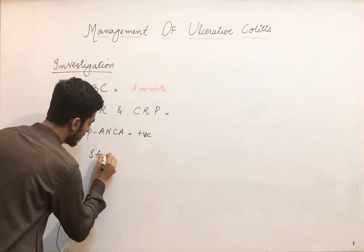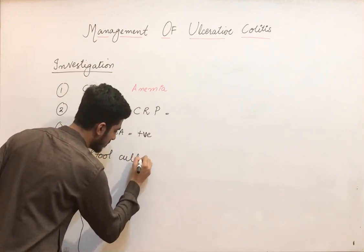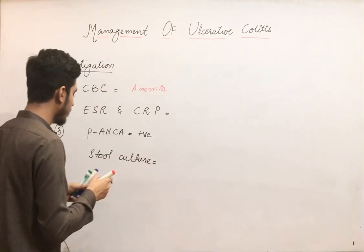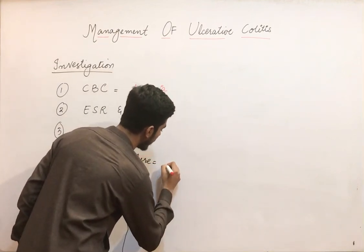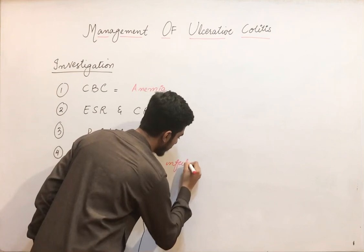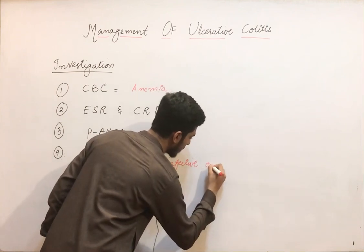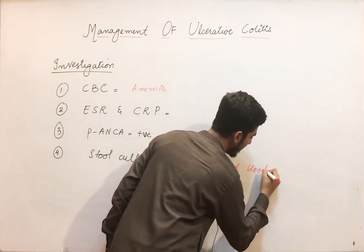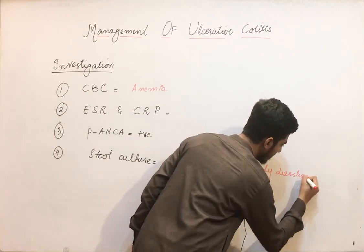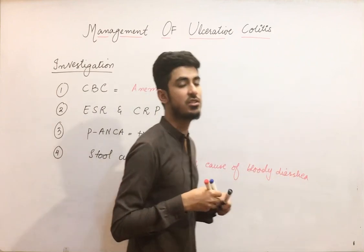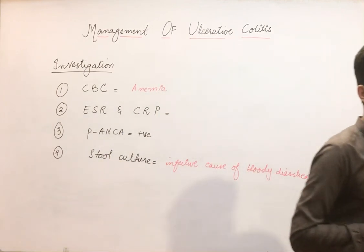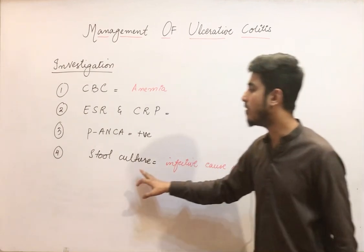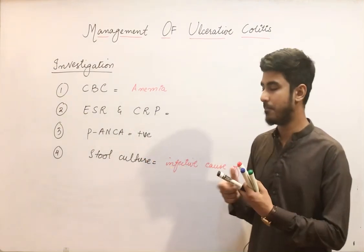The fourth investigation is the stool culture. We are doing this stool culture in order to rule out an infective cause — infective causes of bloody diarrhea — because certain infectious agents can lead to bloody diarrhea.